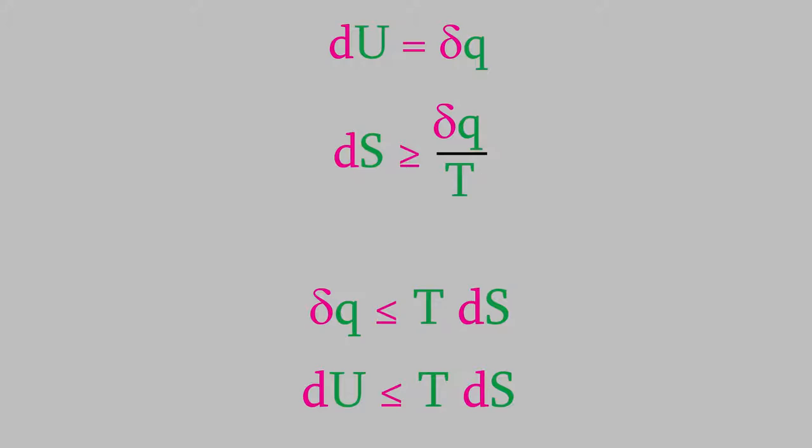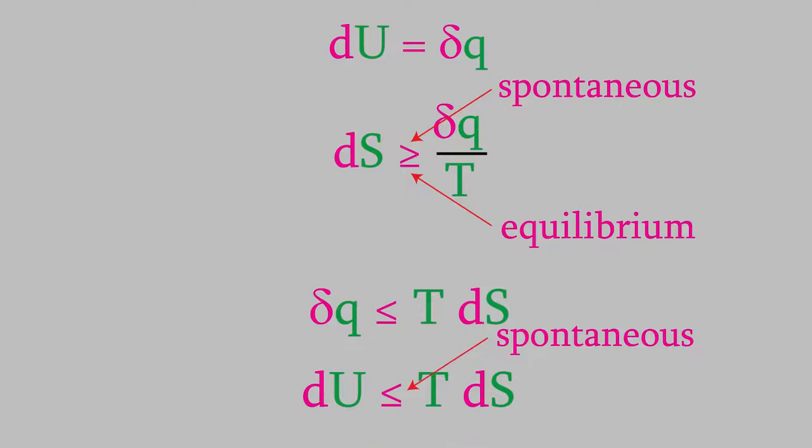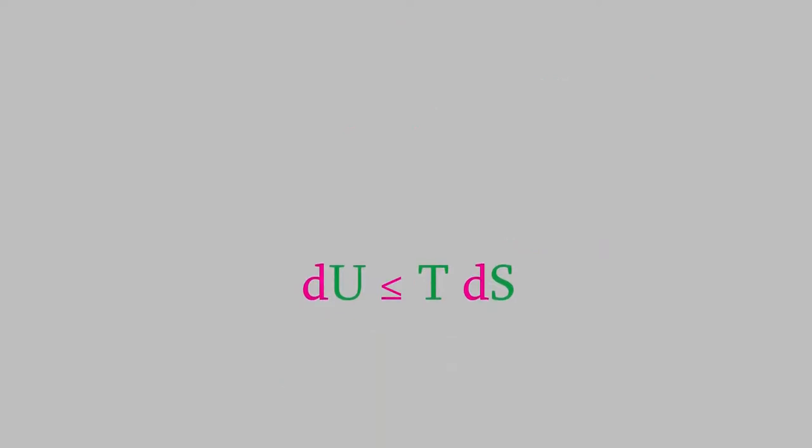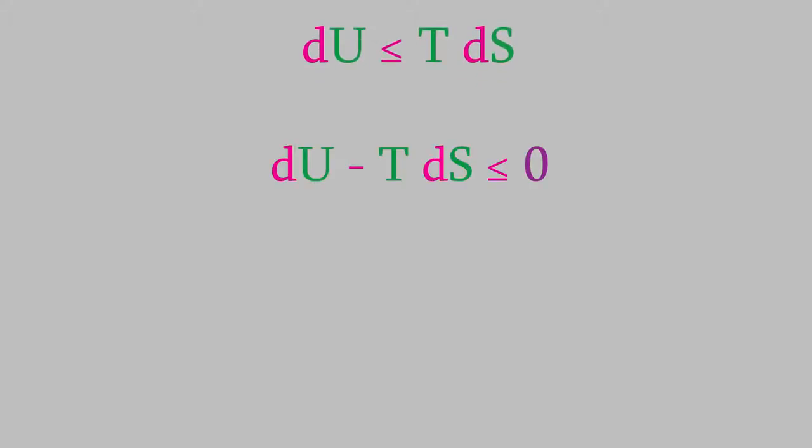Let's remember that the two sides of the original inequality we used is equal for a process at equilibrium and greater than for a spontaneous process. In the same way, the less than inequality we got here is correct for a spontaneous process. Let's move the T dS to the left side of the equation. Now we can group together the two terms this way. The reason we would do this is because, written this way, the equation is telling us that for a spontaneous process, the change in U minus TS will be less than zero, so it's a negative number.